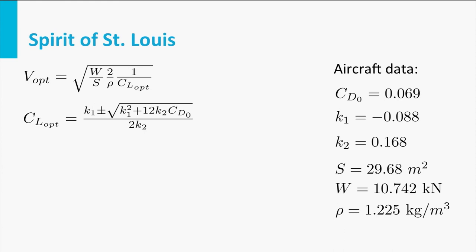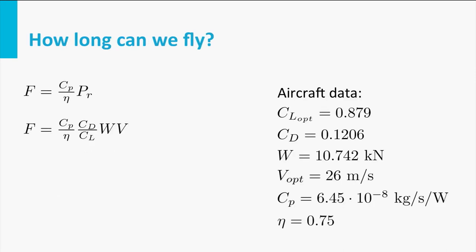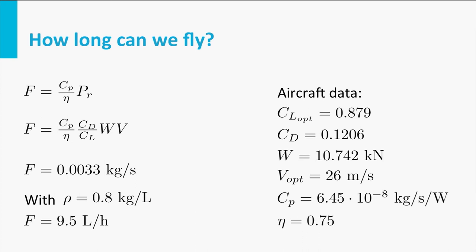Applying this equation to the Spirit of St. Louis gives the same optimal speed as the graphical calculation: 26 m/s or 93 km/h. The corresponding fuel flow works out to 0.0033 kg of fuel per second, or in other words, 9.5 liters of fuel per hour.